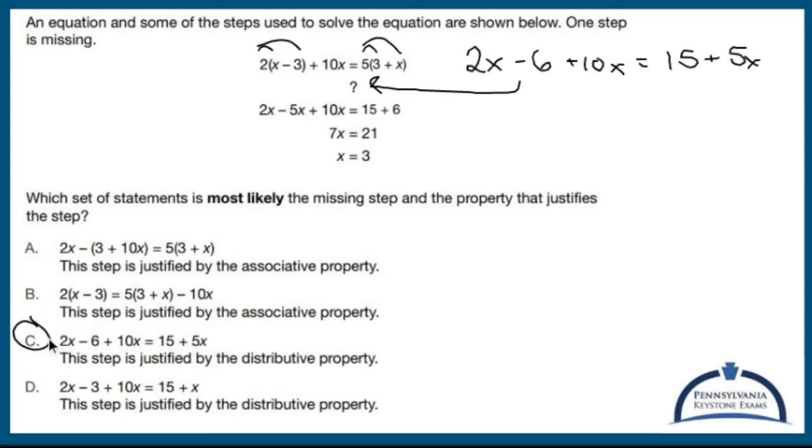Now, if you're wondering, like, well, what's the difference between C and D? Well, D has a 5 missing, so tricky. But it's distributive property for sure. That's the step that I seem to be missing right there. That's what I got. And I'm sticking to it.